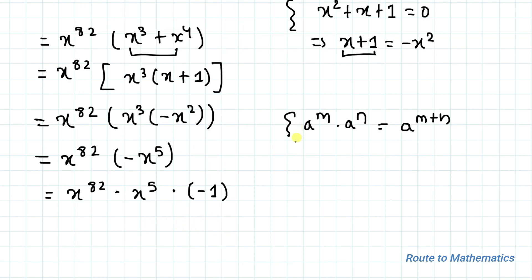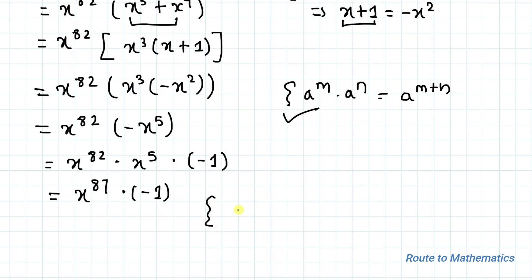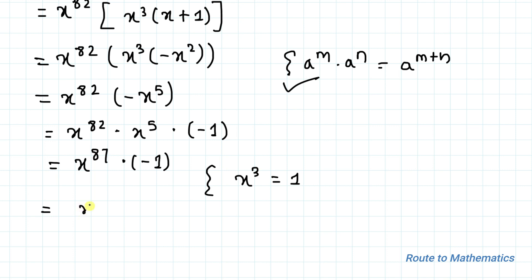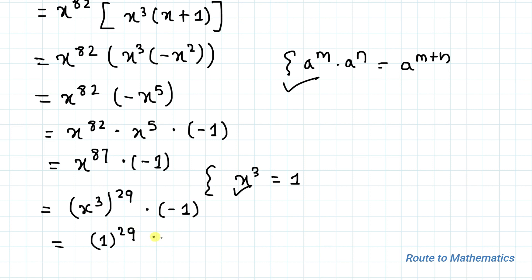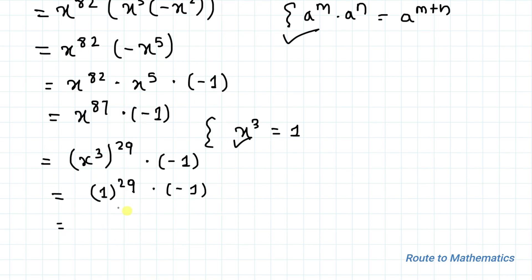From equation 2, x cubed equals 1. We can write x to the power 87 as (x cubed) to the power 29, since 3 times 29 equals 87. Substituting x cubed equals 1, we get 1 to the power 29 times minus 1. Since 1 to the power 29 is 1, we have 1 times minus 1, which equals minus 1.